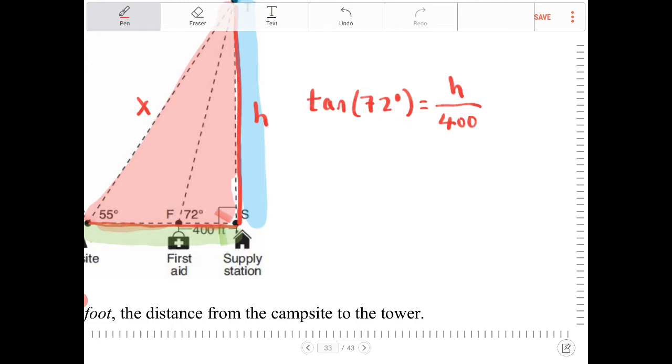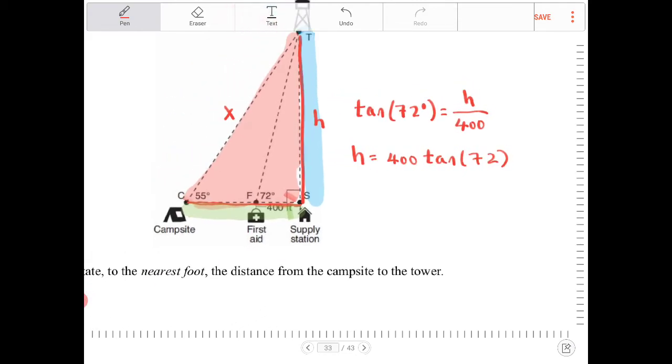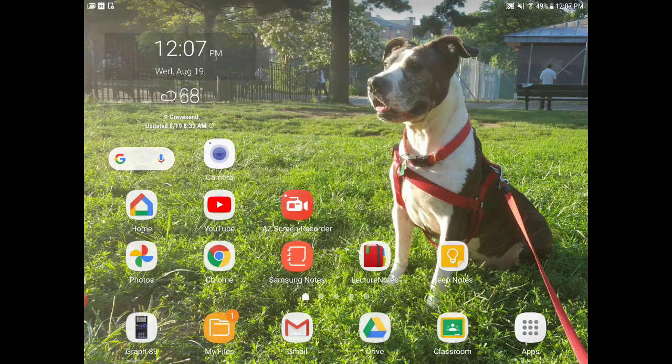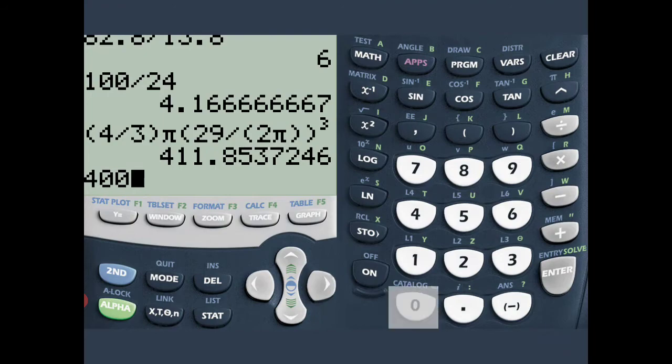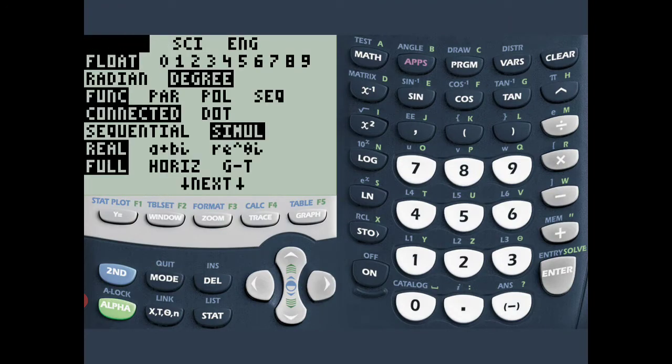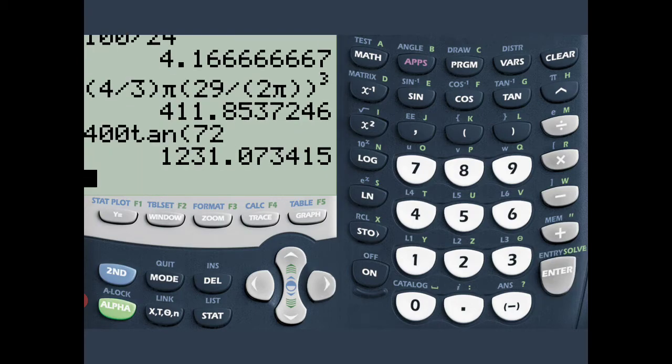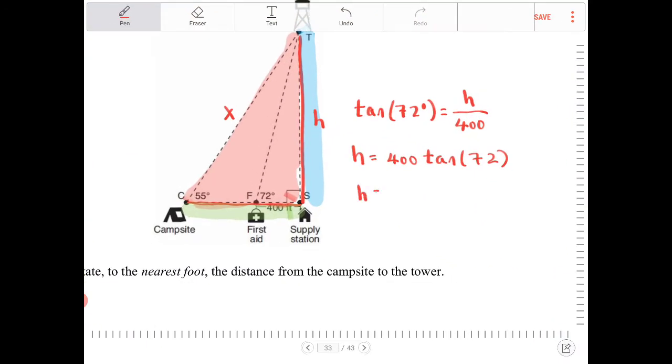I can then solve for what H is. H will equal to 400 tangent 72. I can then enter that into the calculator. Let's do that. So 400 tangent 72. Make sure your calculator setting is in degrees. So it's the third row, second option there. Let's press enter. That's 1231.073.